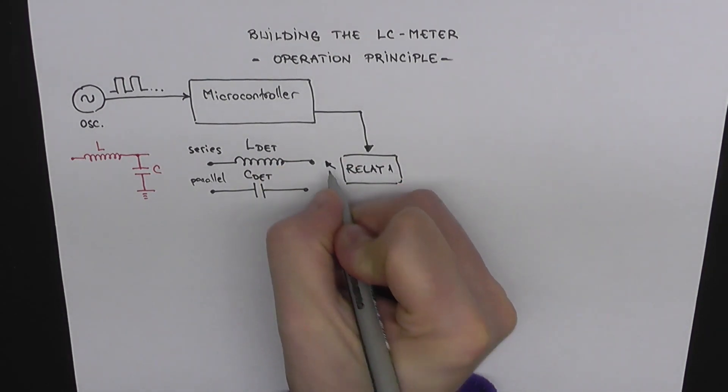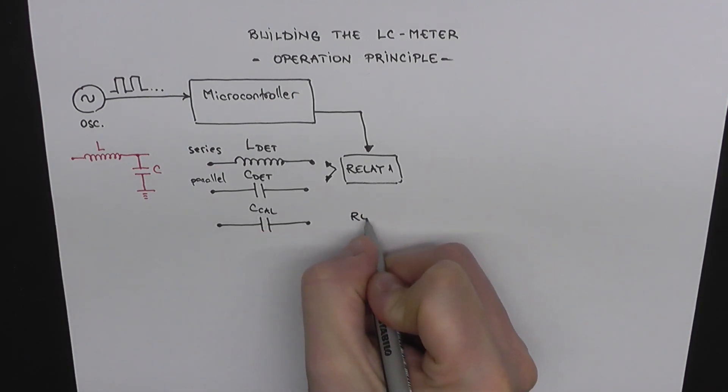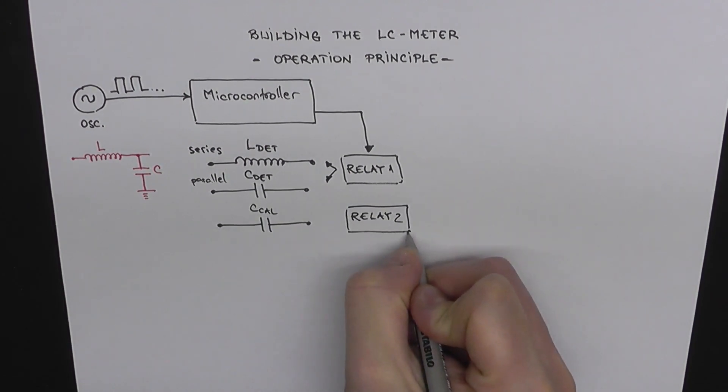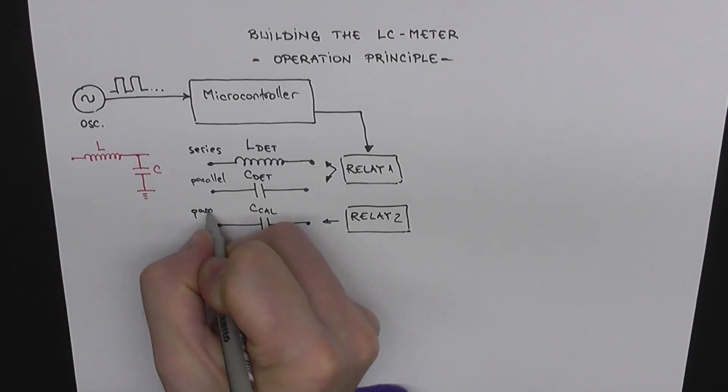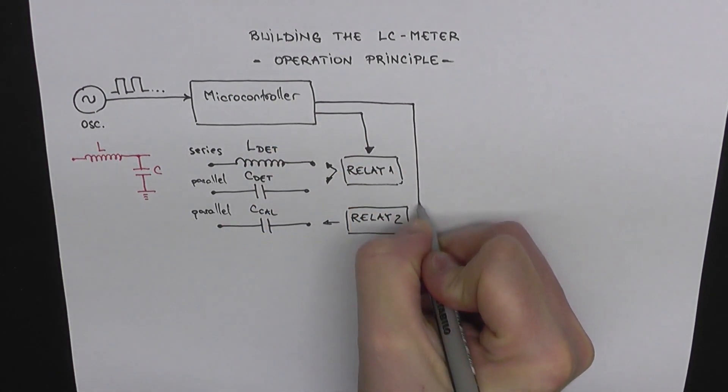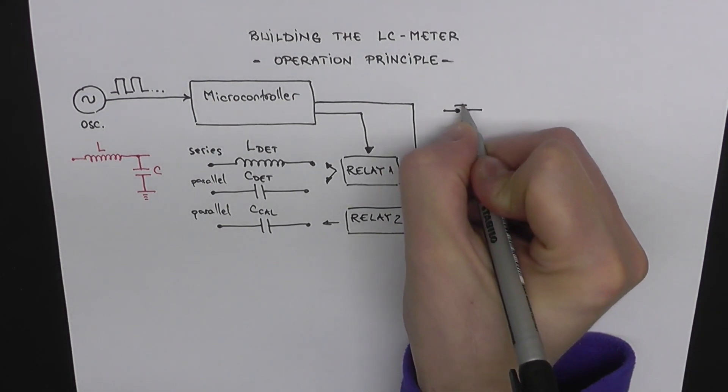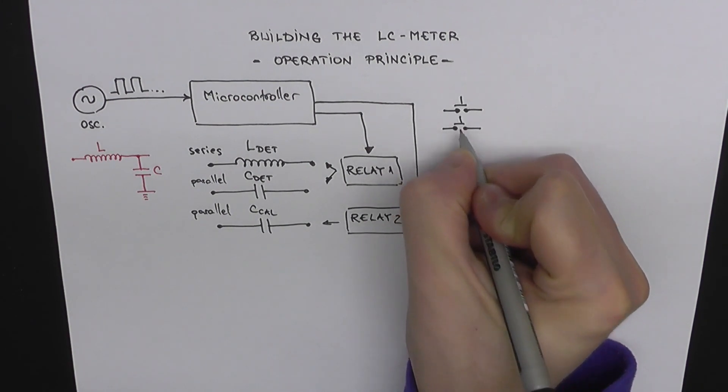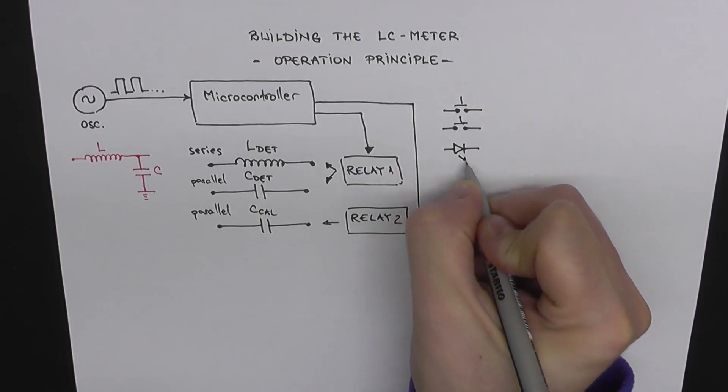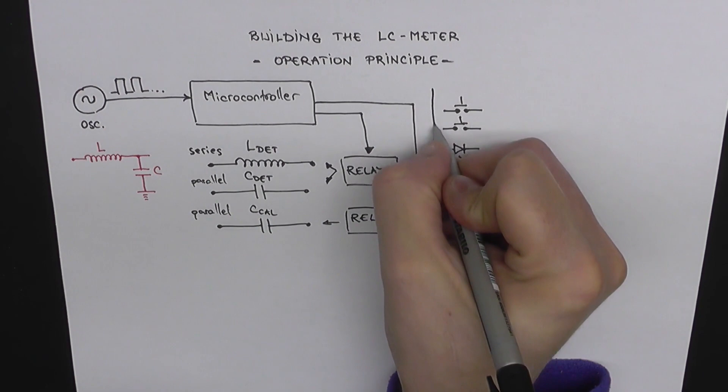And we also want to be able to connect yet another capacitance, a very precise capacitor, to calibrate the whole system. And we're going to use a second relay to connect or disconnect this calibration capacitance in parallel to our existing C. And we're also going to drive this second relay using the microcontroller, which is going to be an 8-bit AVR. The rest is just auxiliary parts, some push buttons, some LEDs, and an LCD which we're going to use to display the measured values.